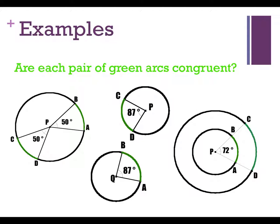Three scenarios: left, middle, right. Are the green arcs on the left congruent? Yes. Why? Because they have the same measure. And? They're in the same circle. Both 50 degree arcs in the same circle must be congruent.